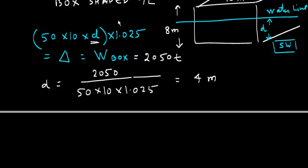So if this is 4 meters, very easy. For me, now it's very easy that KB is going to be 2 meters. This is 4 meters. So the KB is 2 meters.